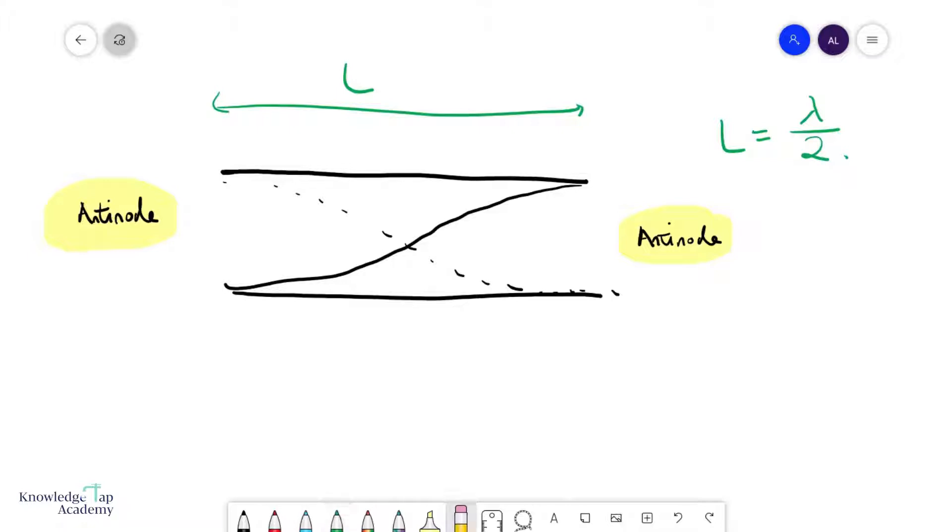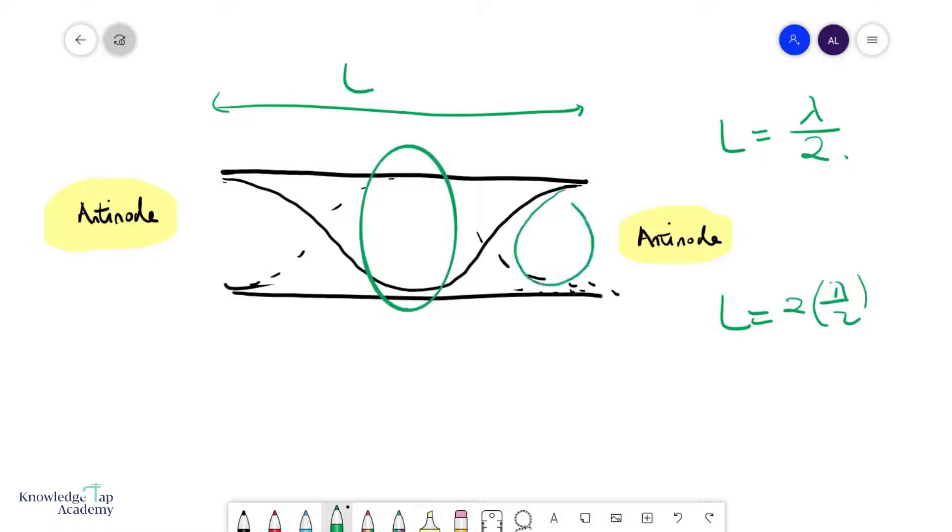And let's try to see what other kinds of stationary waves we can form, keeping in mind that we must have antinodes on both sides. So of course I could do something like this as well. I've got the two dotted lines for this one, in which case you'll see that L will equal to exactly one wavelength, or should we say two times of lambda over 2. So I've got one half wavelength here, and these two together give you another half wavelength.